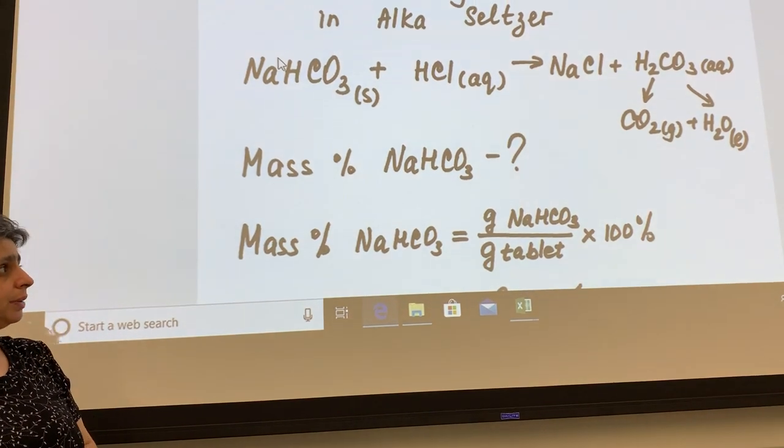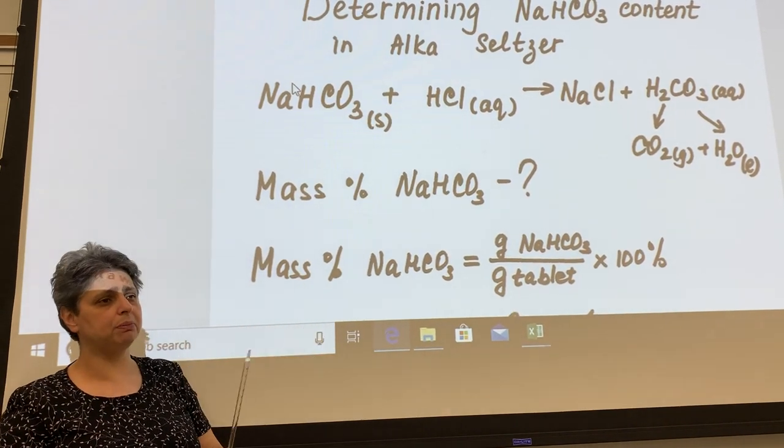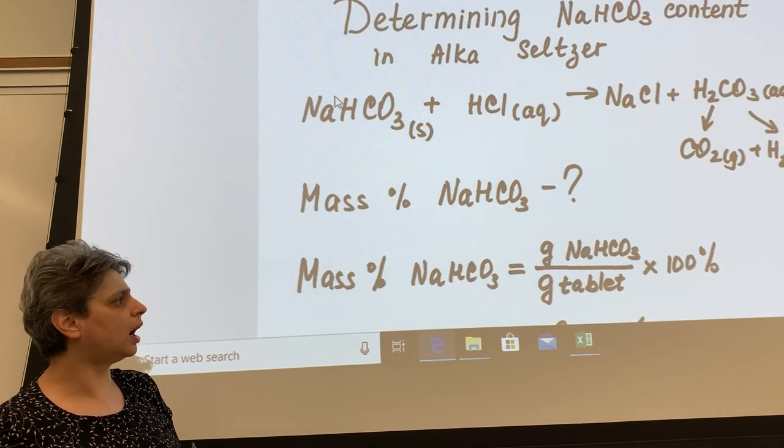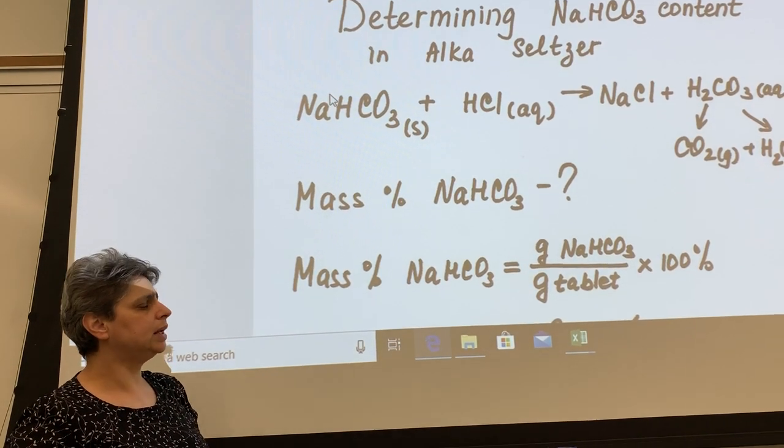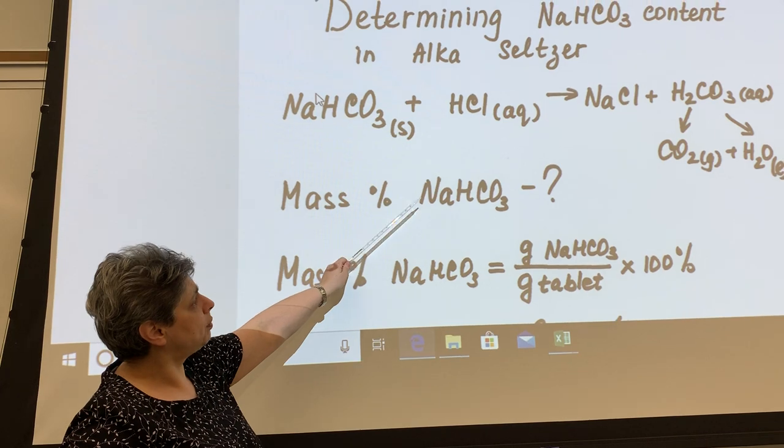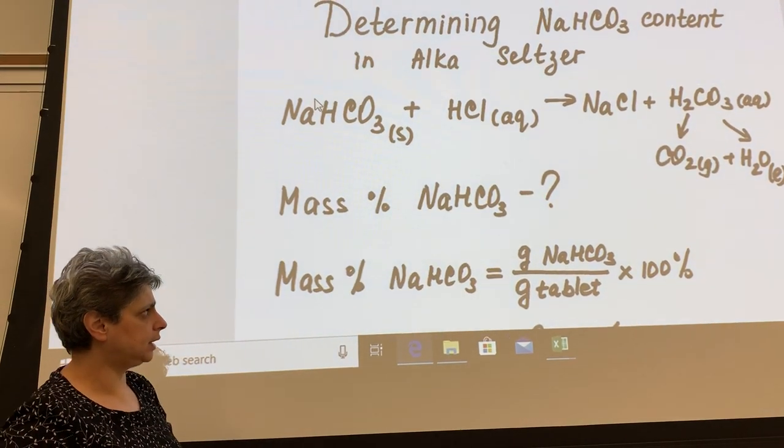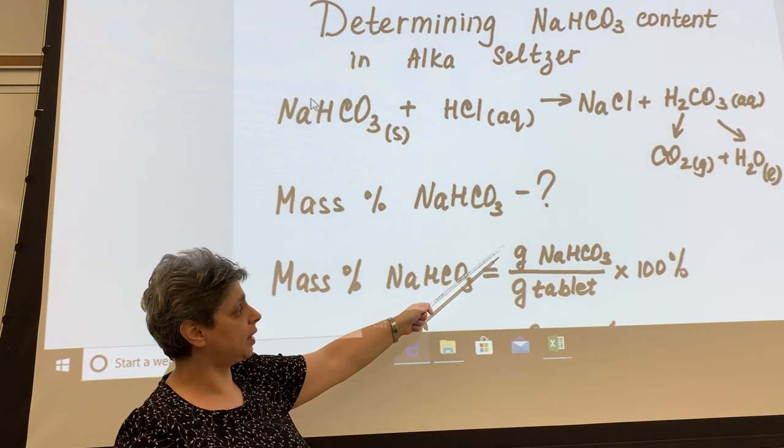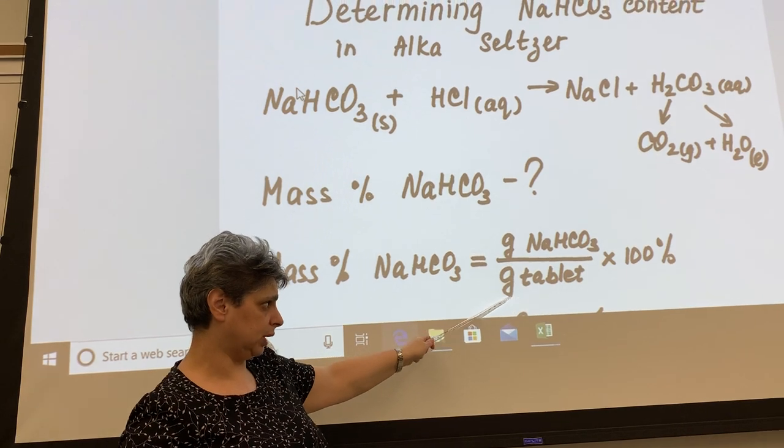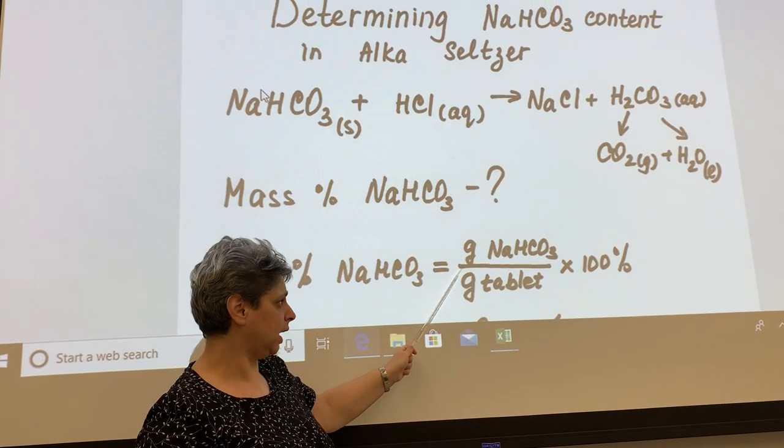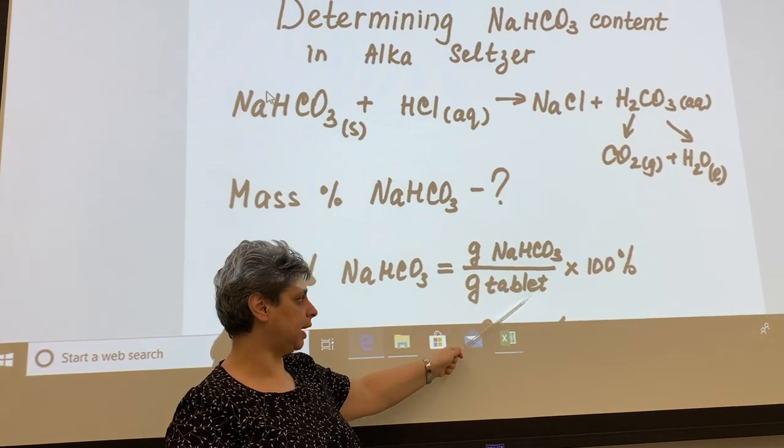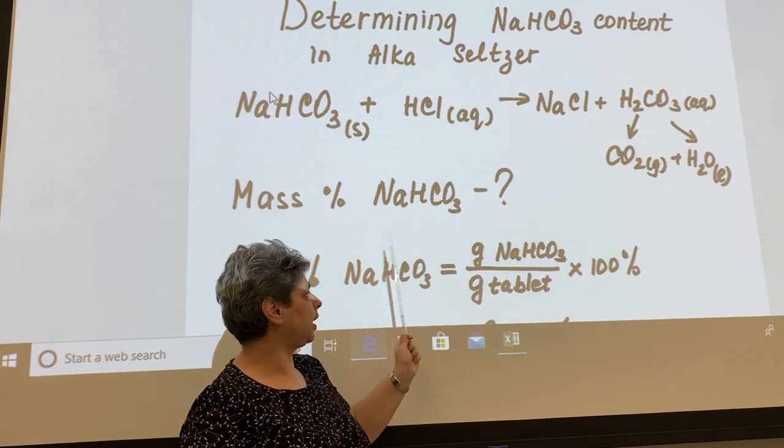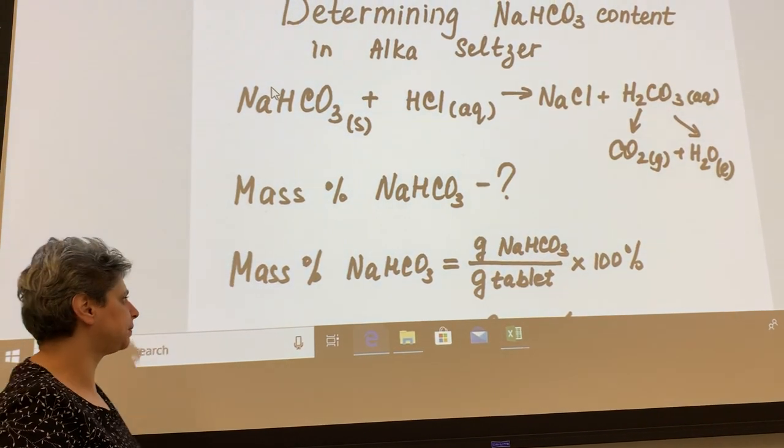And then, once we are able to do that, we can determine mass percent of sodium bicarbonate in the tablet. Remember, the tablet is not pure sodium bicarbonate, it's actually a mixture of various ingredients, including aspirin, and there's one other sort of mystery ingredient, let's call it that for now, we'll discuss this a little later. So we need to know mass percent of just sodium bicarbonate in the tablet. Mass percent of sodium bicarbonate in the tablet is found as grams of bicarbonate divided by grams of tablet. Again, we're going to start by taking a piece of tablet and weighing it, so we will know grams of tablet we're using for the experiment.